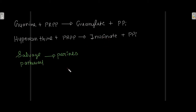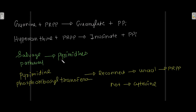The salvage pathway for pyrimidines is quite similar to the salvage pathway for purines. In the case of the salvage pathway for pyrimidines, the enzyme pyrimidine phosphoribosyltransferase will reconnect uracil with PRPP, but this enzyme will not connect cytosine to PRPP. That is how the salvage pathway takes place in the case of pyrimidines.